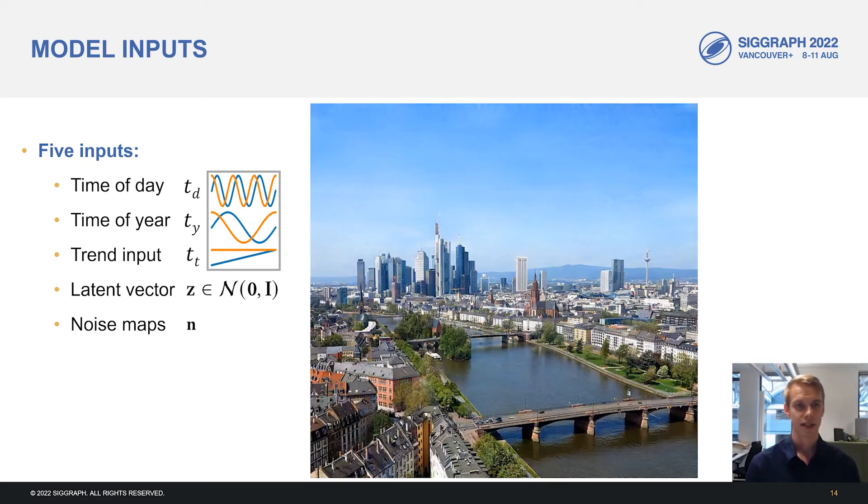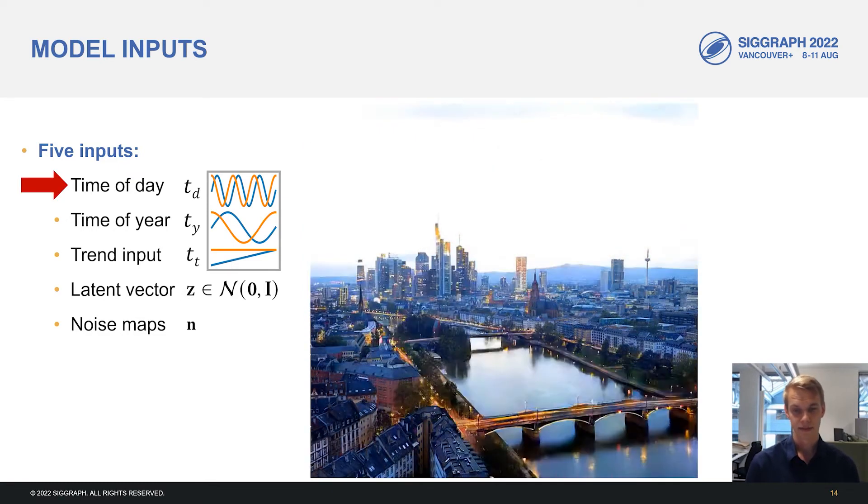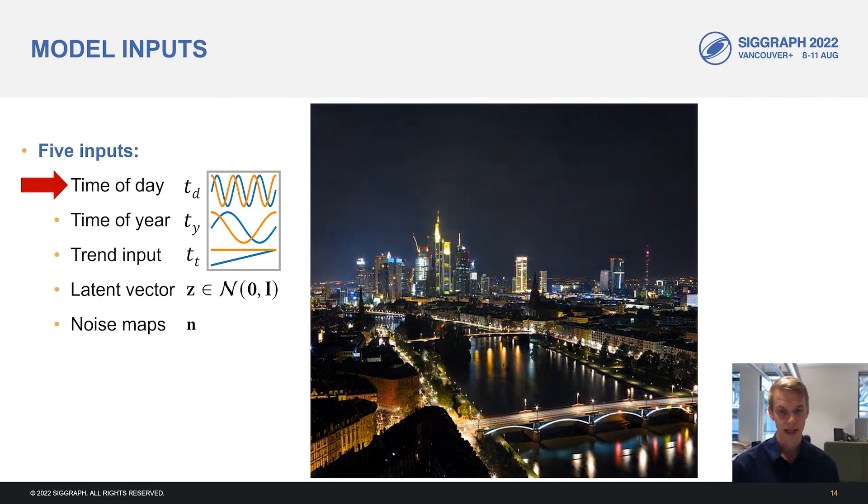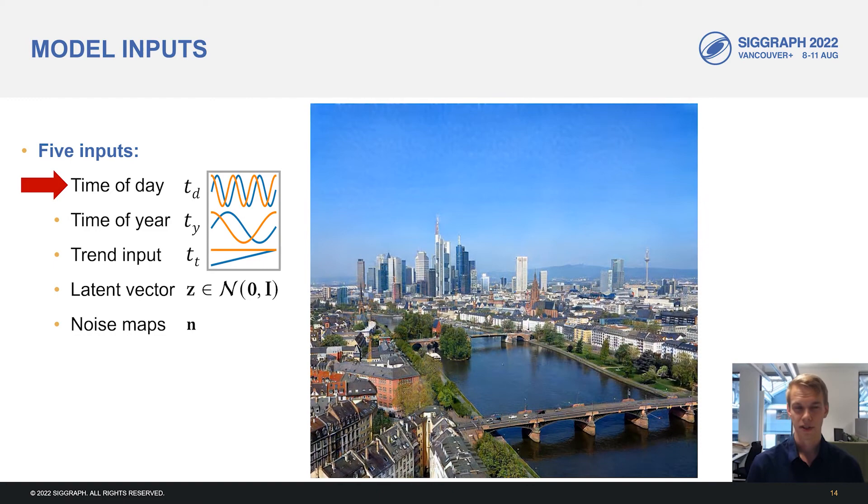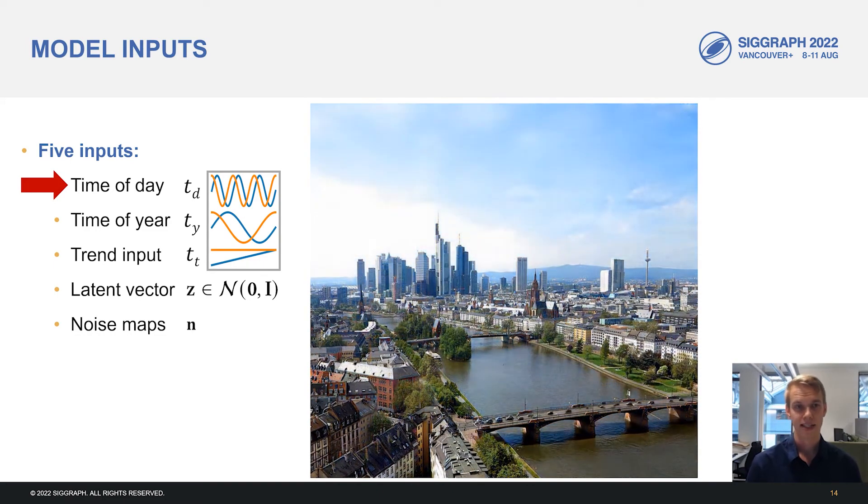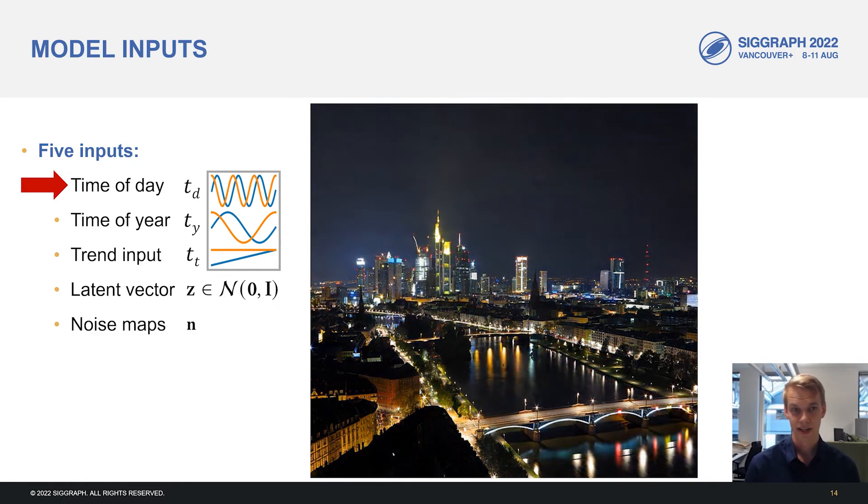Let's take a look at the changes each of our inputs has on the output. Our starting point here is early summer at noon in Frankfurt, Germany. When we change the time of day input, we can see the image changing from daytime to nighttime and the sun moving in the sky accordingly. Also interesting is the fact that some lights that are on in early evening in the image can be seen turning off later during the night.